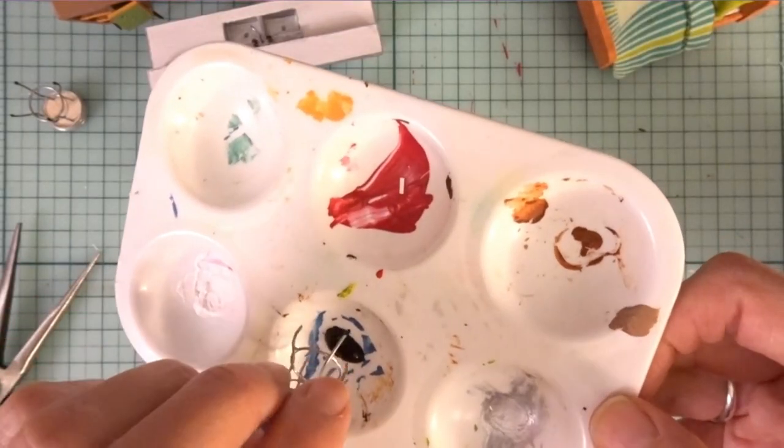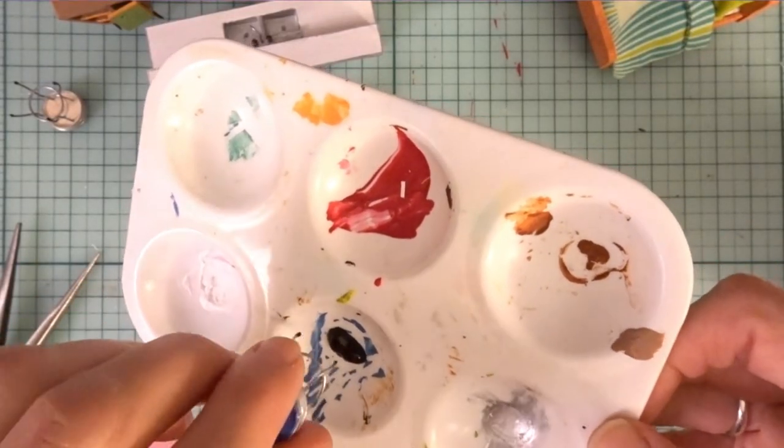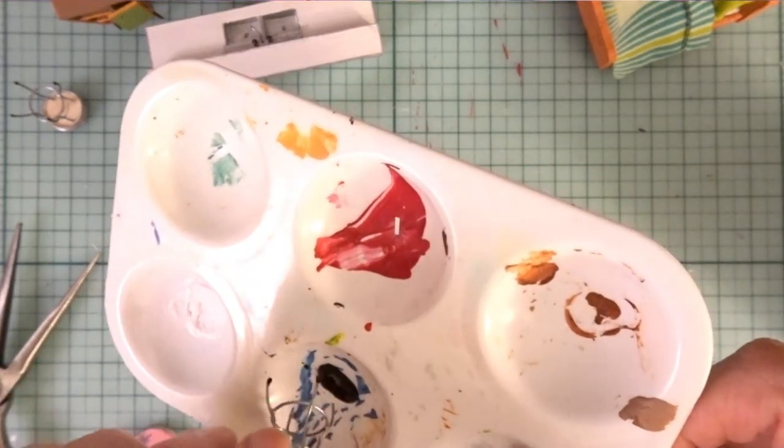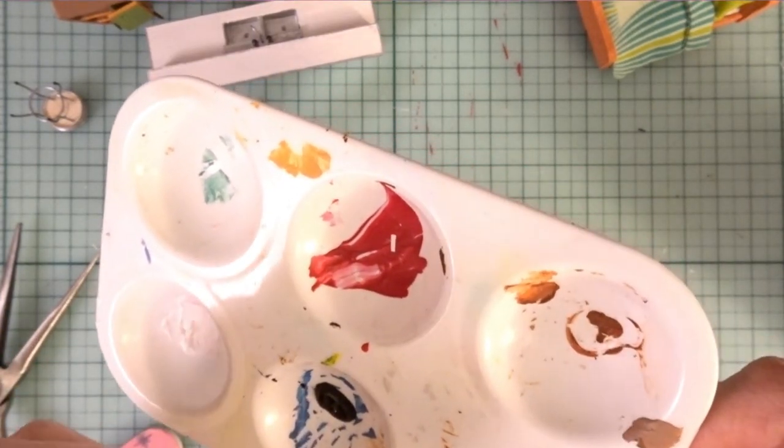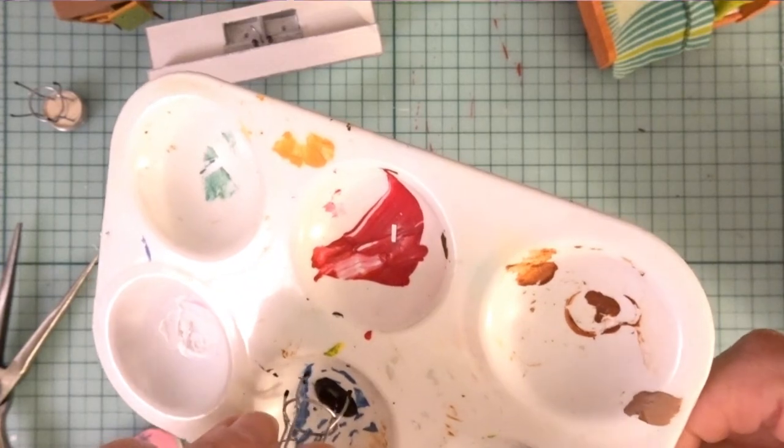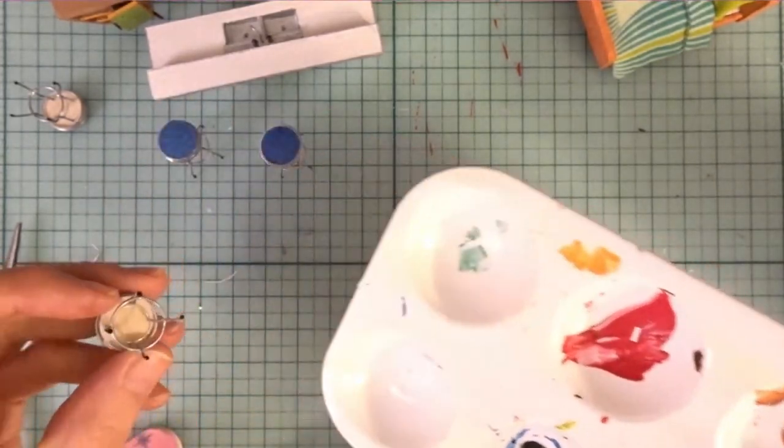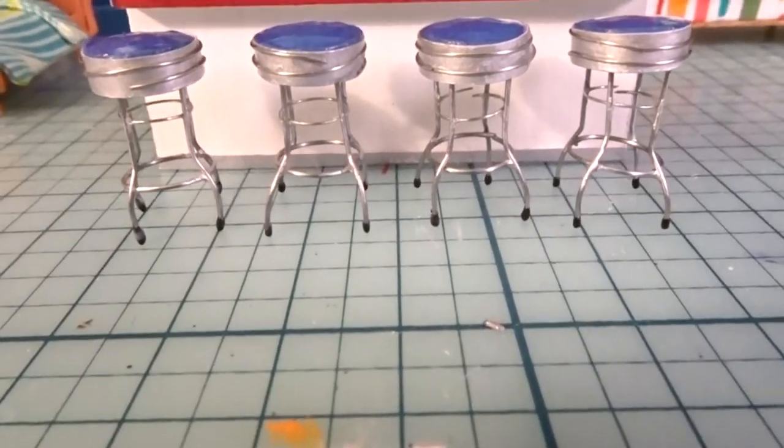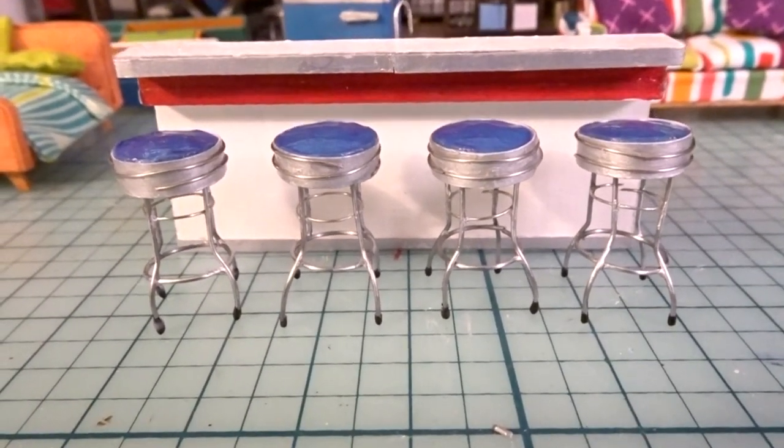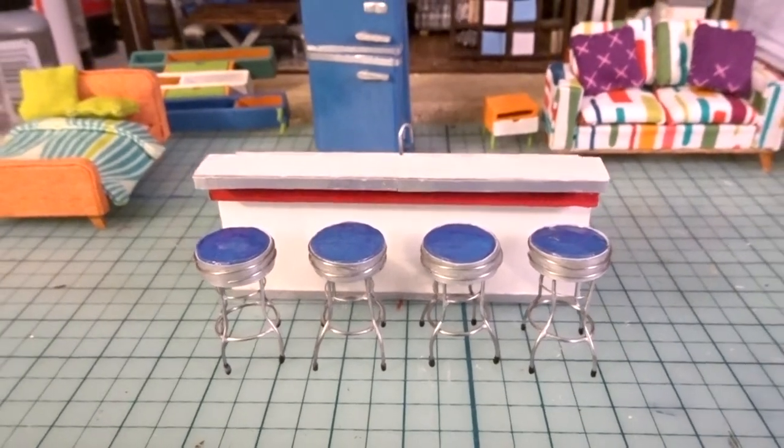Now I'm dipping the ends in black paint to make them look like little rubber stops that you'd find on the stools. You can use any color that you want. I just chose black. And there you go, that's it. Those are the finished stools with the retro sink and some of the retro furniture that I've made.